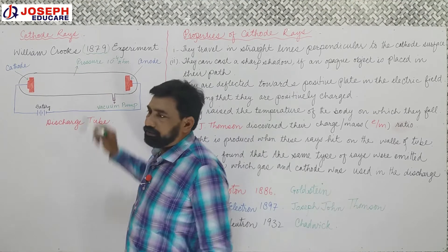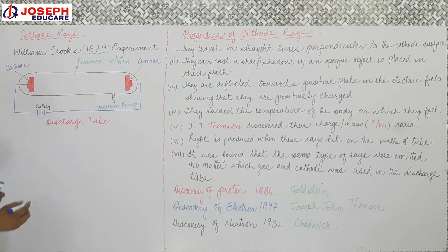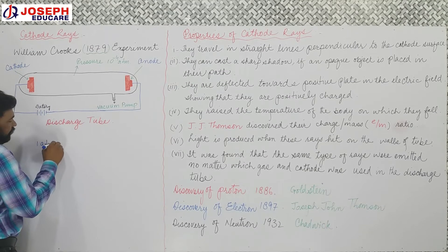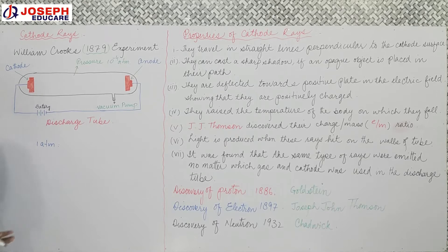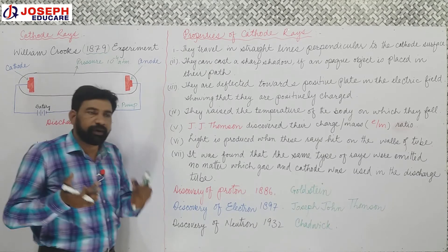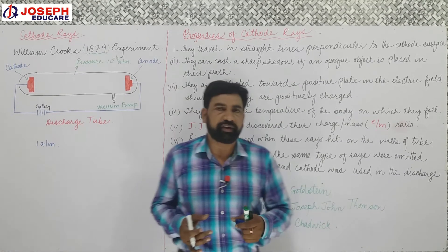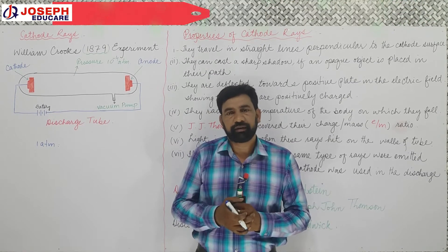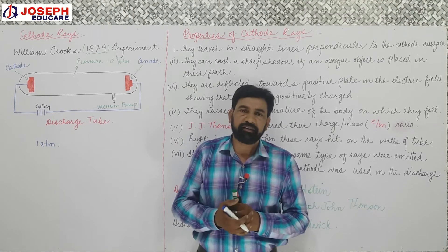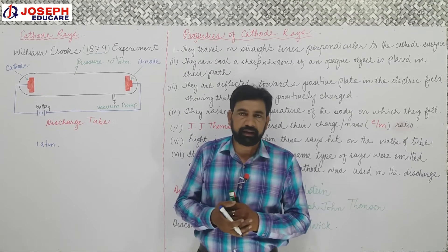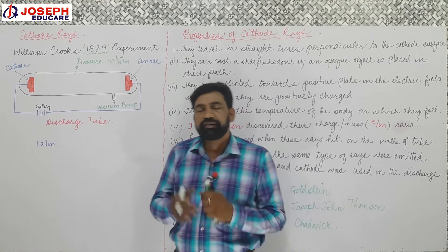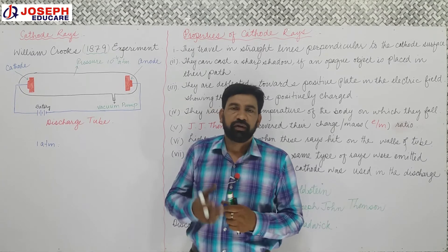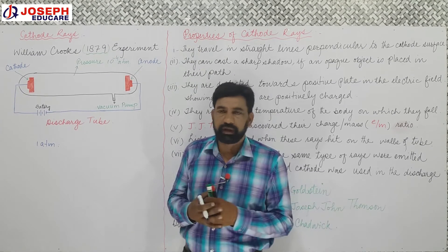This 10 to the negative 4 ATM — let us understand what it means. Do you know what one ATM is? One atmospheric pressure is the normal pressure that we experience in common life. We call this one ATM pressure — one atmospheric pressure. People who live in coastal areas, like people of Karachi at sea level, experience this atmospheric pressure.